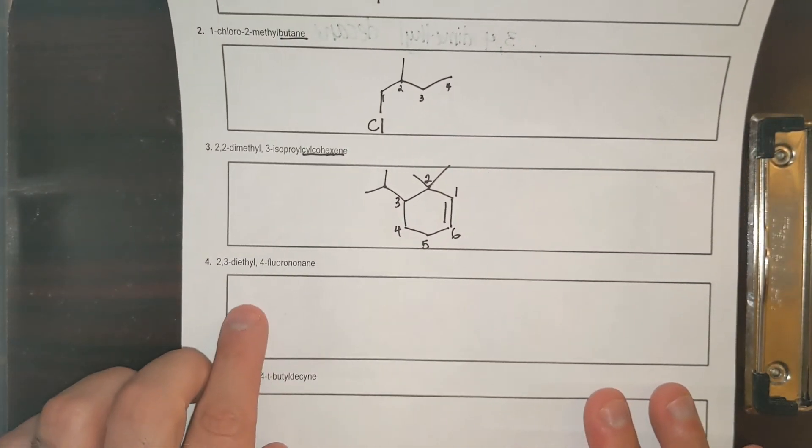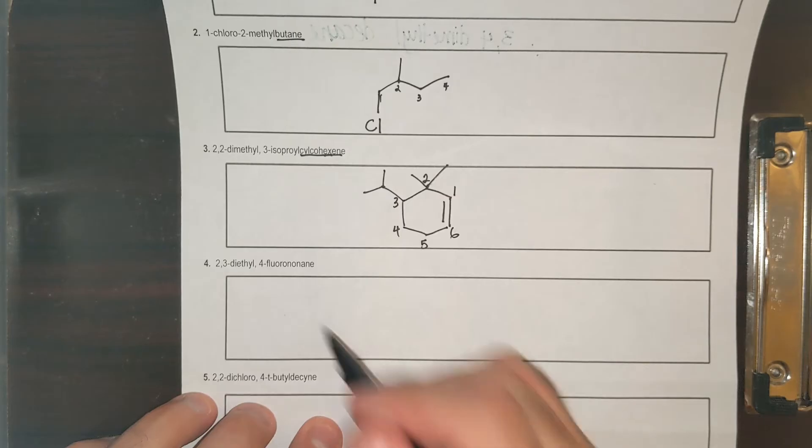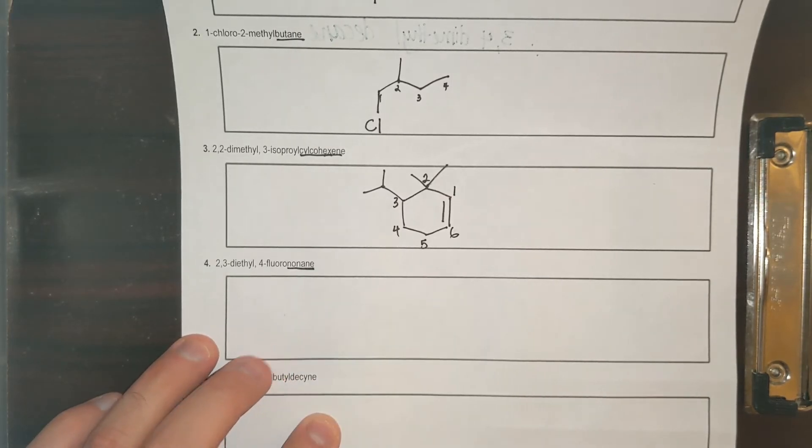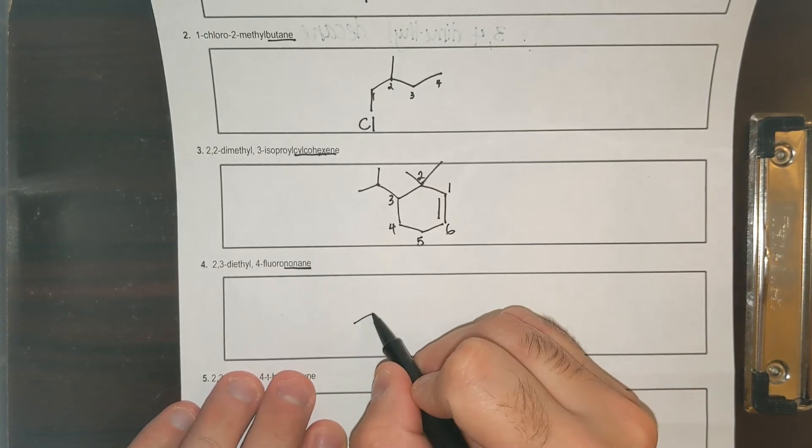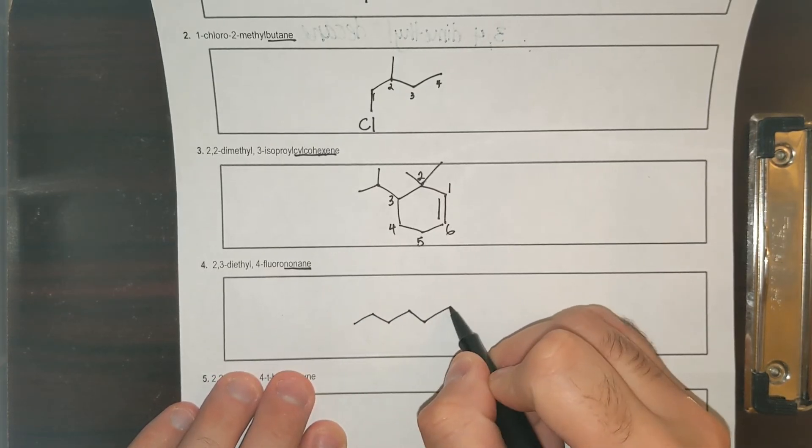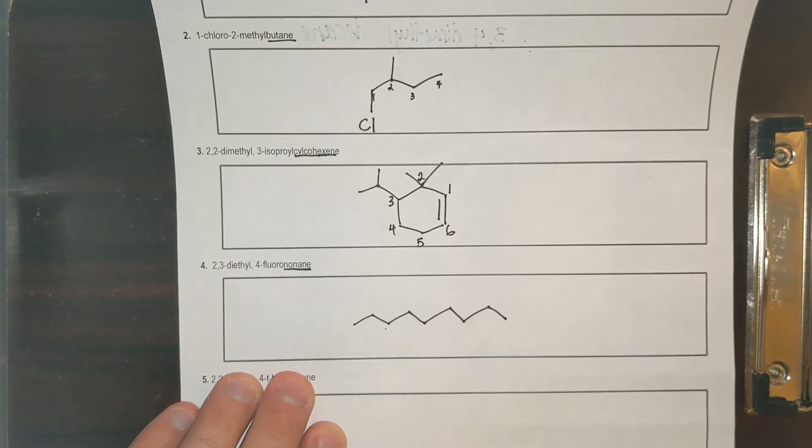Alright, number four. 2,3-diethyl-4-fluorononane. Nonane is the parent. Nonane means I need nine carbons. One, two, three, four, five, six, seven, eight, nine. Good.